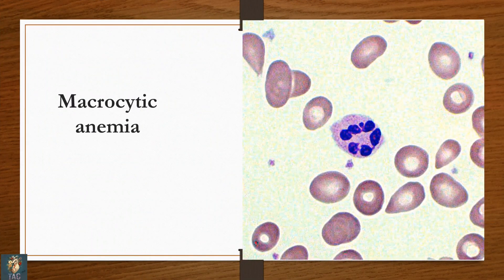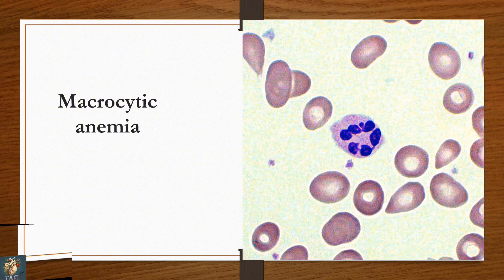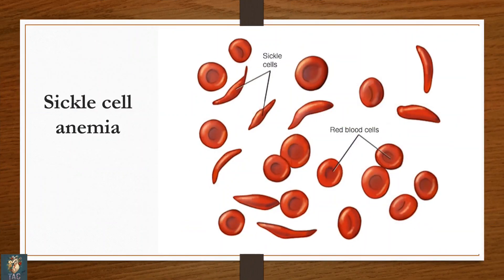Another hypersegmented neutrophil with macrocytic RBCs — the diagnosis is macrocytic anemia. The major cause of macrocytic anemia is vitamin B12 and folic acid deficiency.